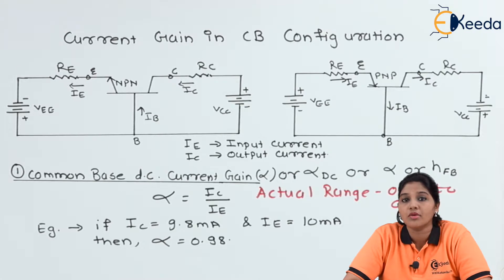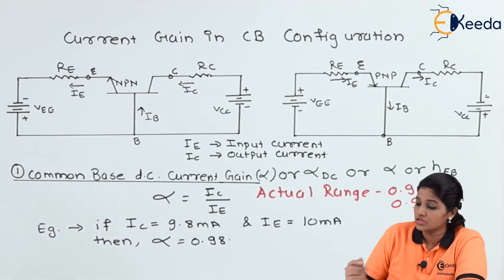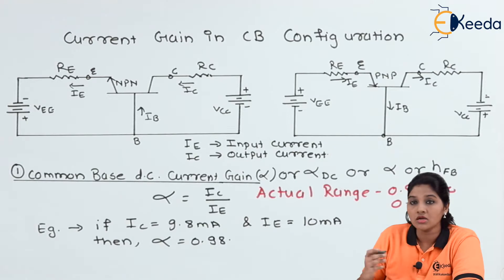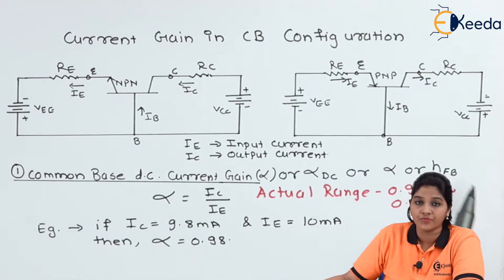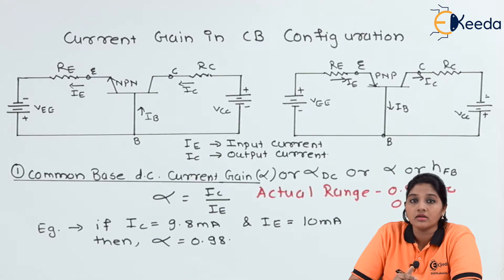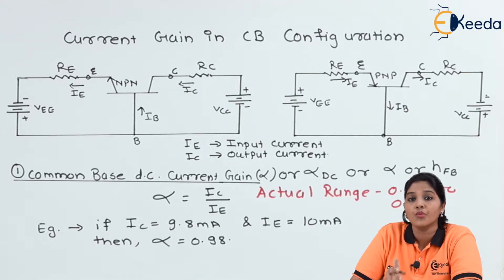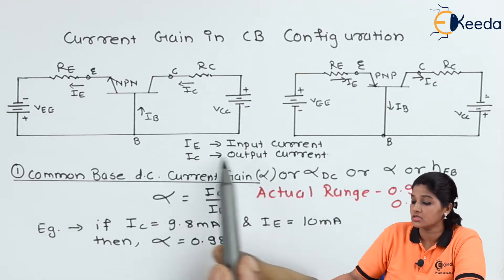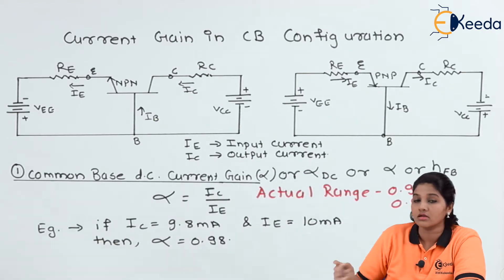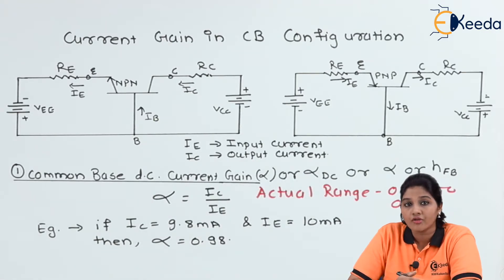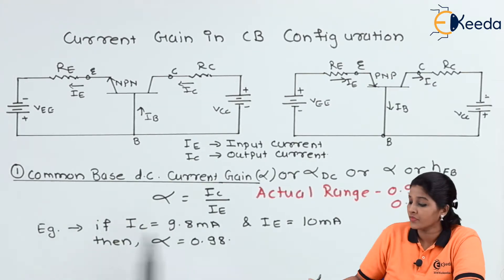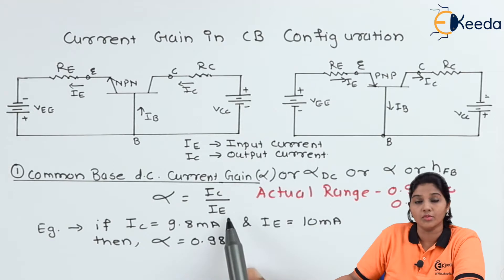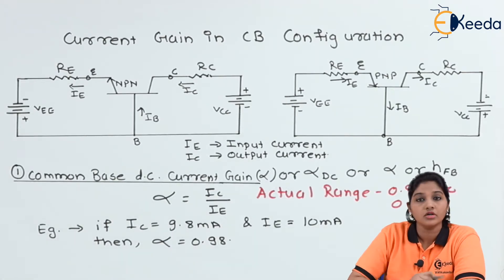Now let's see what is meant by DC current gain in common base configuration. The common base DC current gain is denoted by alpha, or alpha DC, or H_FB (capital). Current gain is nothing but the ratio of output current to input current. In common base configuration, whether you use an NPN or PNP transistor, the emitter current is the input current and the collector current is the output current. So, alpha is nothing but the ratio of collector current to emitter current — that means output current to input current.